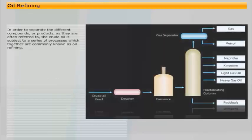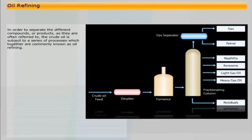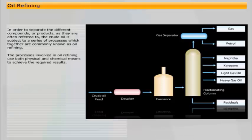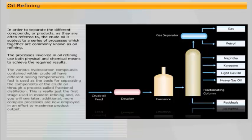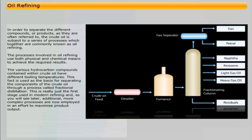In order to separate the different compounds, or products as they are often referred to, the crude oil is subject to a series of processes, which together are commonly known as oil refining. The processes involved in oil refining use both physical and chemical means to achieve the required results. Additional, more complex processes are now employed in an effort to maximise product output.